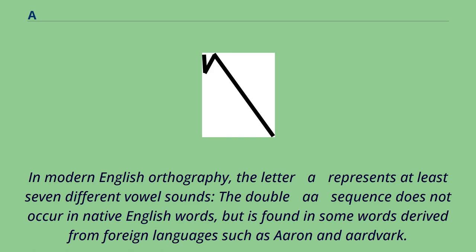In modern English orthography, the letter A represents at least seven different vowel sounds. The double A sequence does not occur in native English words but is found in some words derived from foreign languages such as Aaron and aardvark.